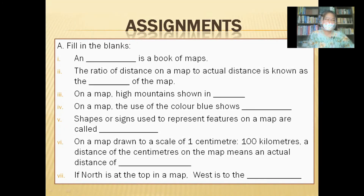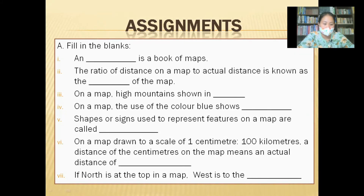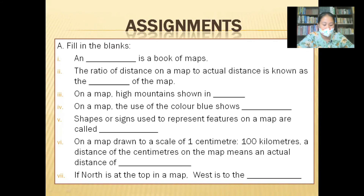For your assignment, fill in the blanks: Number one, an atlas is a book of maps. Number two, the ratio of distance on a map to actual distance is known as the scale of the map. Number three, on a map, high mountains are shown in brown. Number five, on a map, the color blue is used to show water bodies. Number six, on a map drawn to a scale of one centimeter to 100 kilometers, a distance of five centimeters on the map means an actual distance of 500 kilometers.